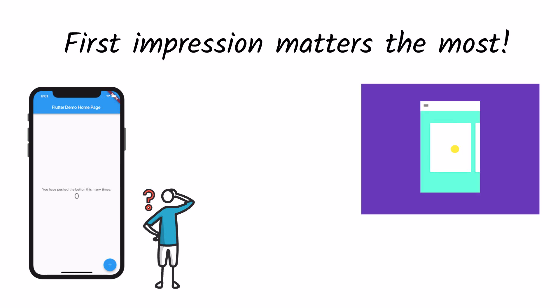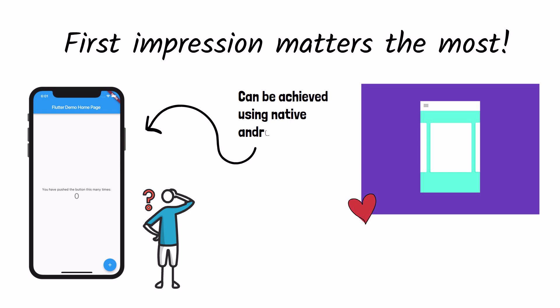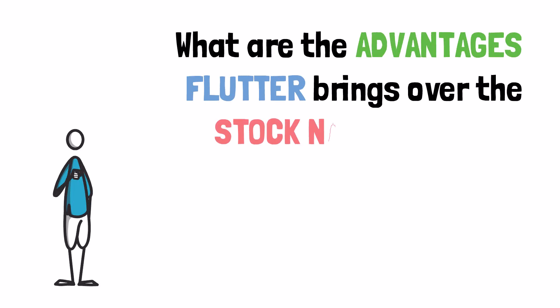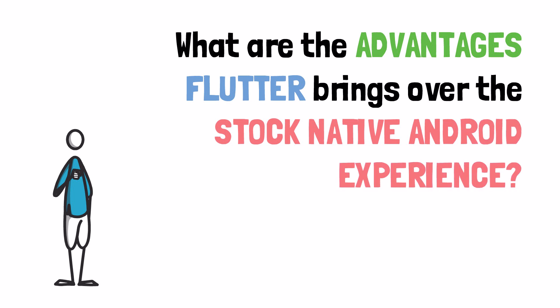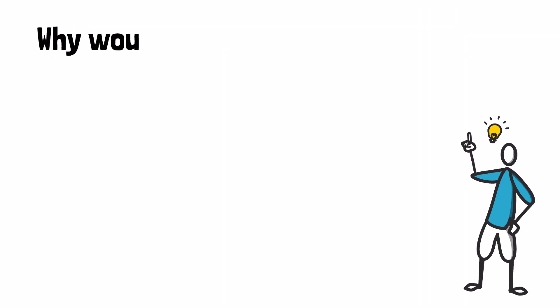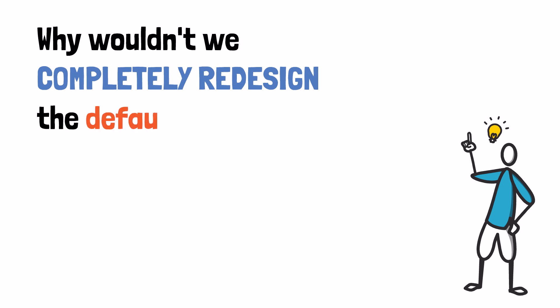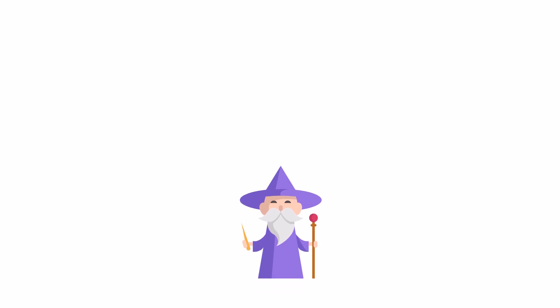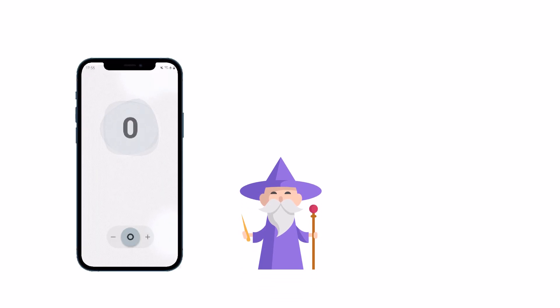Don't get me wrong — I love how structured material design is, but basic material design like the one presented in the default counter app can be achieved using native Android too. What I want to see as a new Flutter developer is what are the advantages it brings over the stock native Android experience. Therefore, why wouldn't we completely redesign the default starting project of Flutter, so that newcomers can actually have a taste of the many amazing things that can be done inside it.